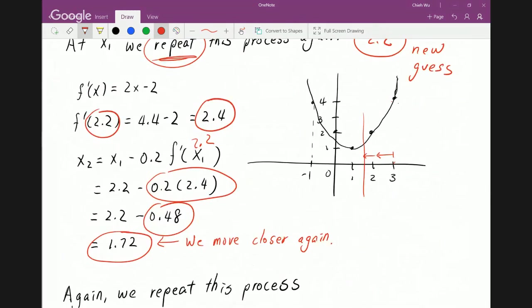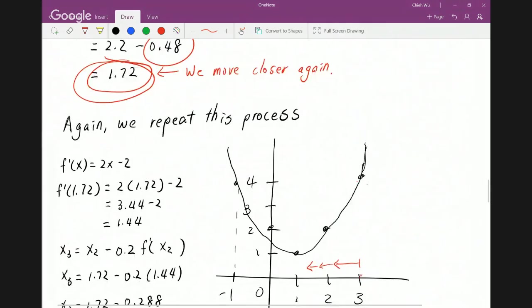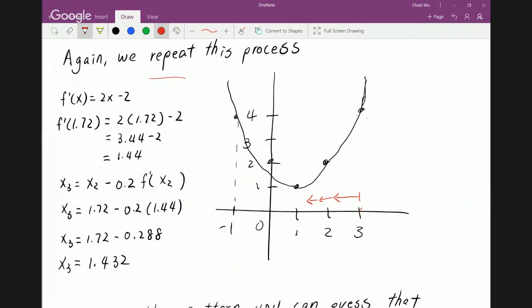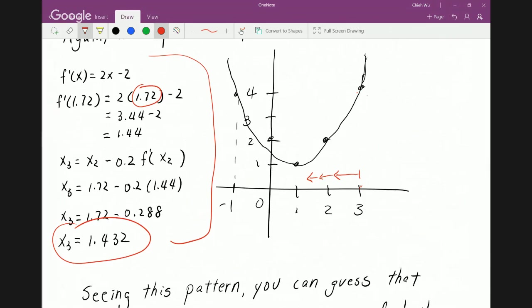So first we went from 3, we moved closer to 2.2, we moved closer again to 1.72. Of course, we repeat this again. Now if we do this whole thing again using 1.72 as the new guess, we will get 1.432. So it keeps going closer. Notice how 1 is the solution and it just goes closer and closer and closer towards the actual solution.